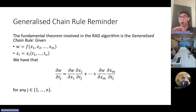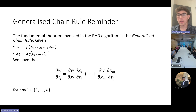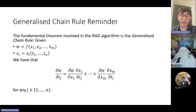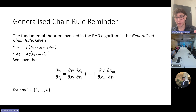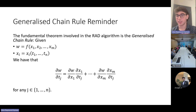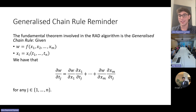The fundamental theorem underpinning all of RAD is the generalized chain rule. Let W be a differentiable function of M independent variables, and for each i, let X_i be a differentiable function of N independent variables. Then the partial derivative of W with respect to T_j is just the partial derivative of W with respect to each of its variables, multiplied by the partial derivative of those variables with respect to T_j, and we sum all those together. To find the derivative of W with respect to T_j, we really only need to know the derivative of W with respect to its variables, and the derivative of the variables with respect to T_j.